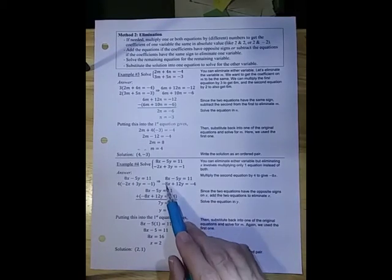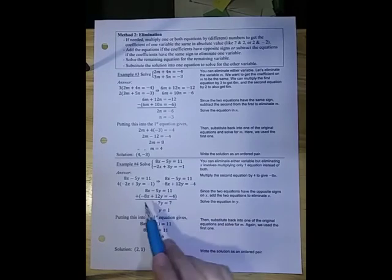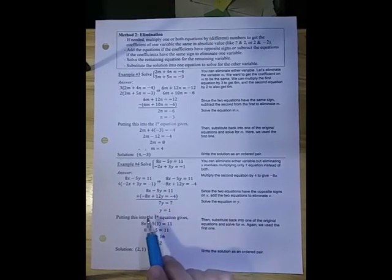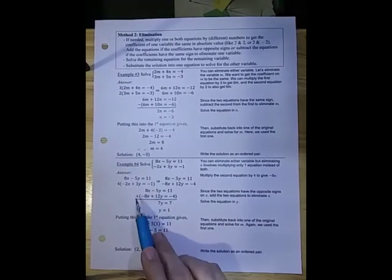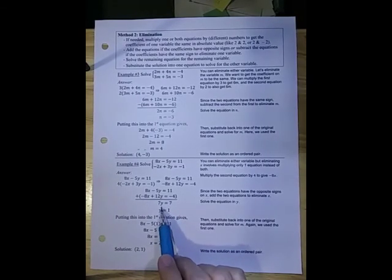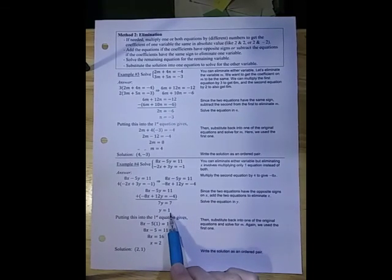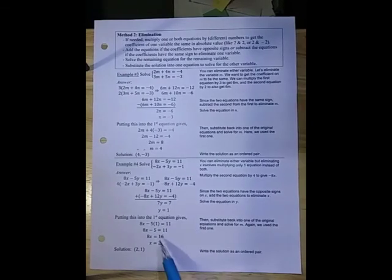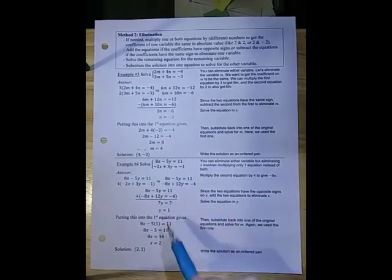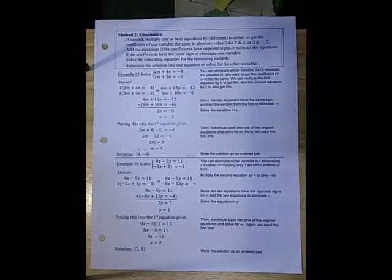And now these have opposite signs, the only way they're going to cancel is if I add them. So I'm going to take those two equations and add what I have. 8x plus a minus 8x, they cancel, minus 5 plus 12 will give 7y, 11 plus a minus 4 is 7, divide by 7 gives me 1. Go back and substitute in either equation, I pick the first one, solve for x, that gives you 2. Again we put them x, y. (2, 1) is our solution.